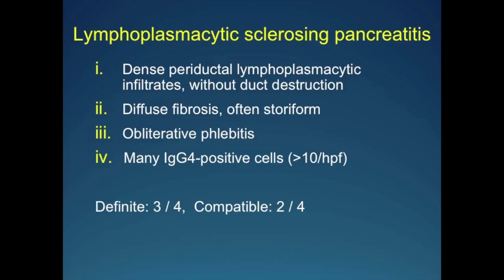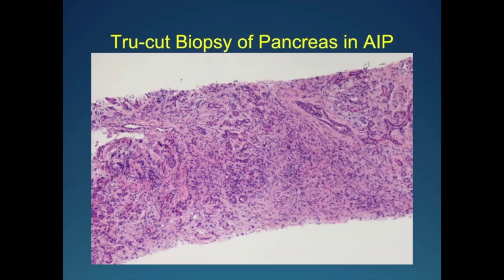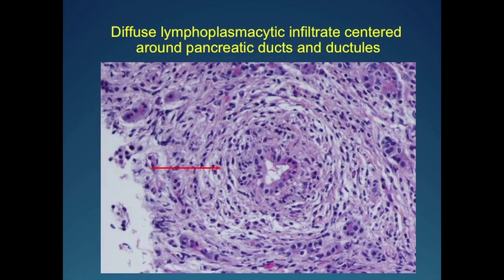What is the characteristic histologic feature? Type 1 is called lymphoplasmacytic sclerosing pancreatitis and has four features — if you have three out of four, you have the diagnosis. There is a dense periductal lymphoplasmacytic infiltrate without duct destruction. There's diffuse storiform fibrosis, which is very peculiar — you can make the diagnosis simply based on that fibrosis. There's also a very peculiar obliterative phlebitis that doesn't affect the neighboring artery. And of course, there are numerous IgG4-positive cells. This is a trucut biopsy of the pancreas showing that storiform fibrosis and diffuse lymphoplasmacytic infiltrate surrounding a small duct without destroying it, which is very important because that distinguishes it from type 2.